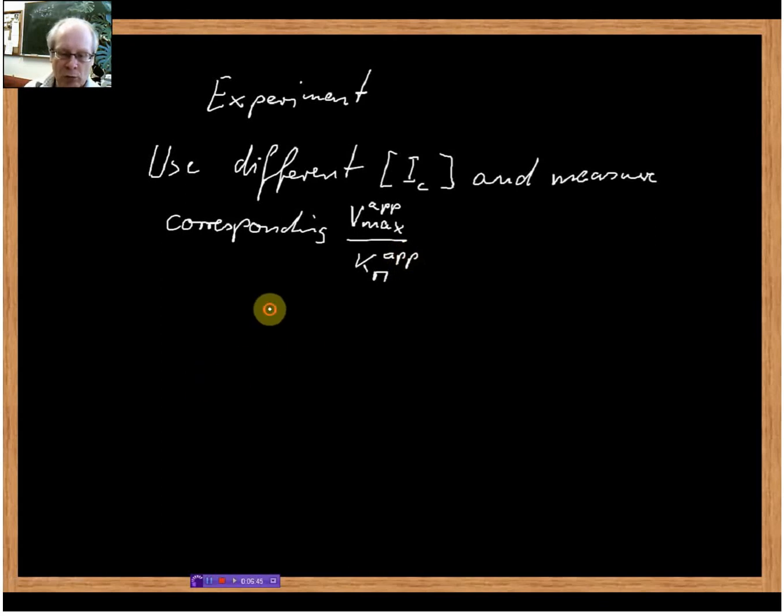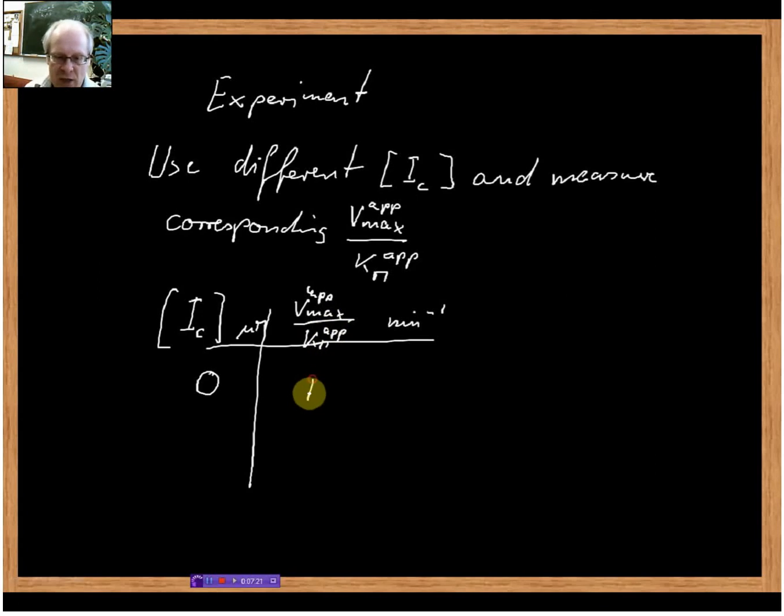We could get a nice table with inhibitor concentration, for example in micromolar, and here we've got Vmax up over KM up with the unit of minute to the minus one. Without inhibitor we've got the original Vmax over KM, let's say that is perhaps 100. In the presence of 2, 4, 6 micromolar inhibitor, we might get 80, 60, 40. So we use different inhibitor concentrations and measure the corresponding Vmax up over KM up.